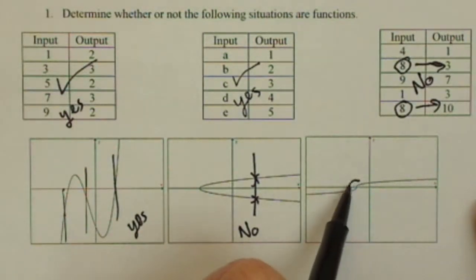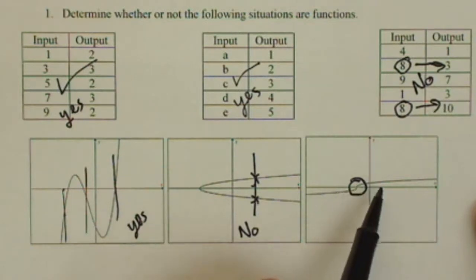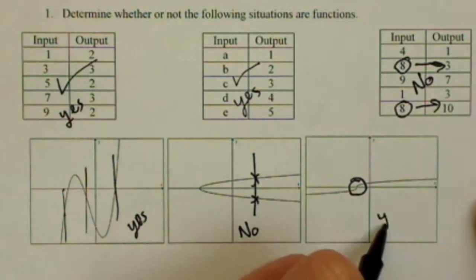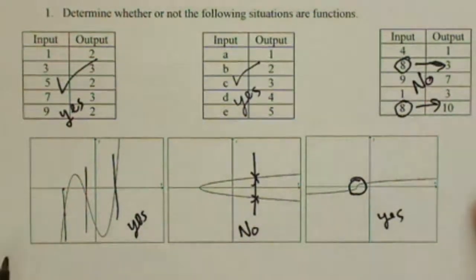This graph's a nice one. Right there, it looks kind of close, but it's actually going to be okay. This is going to pass the vertical line test. And so, yes, it will be a function.